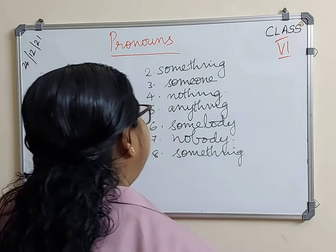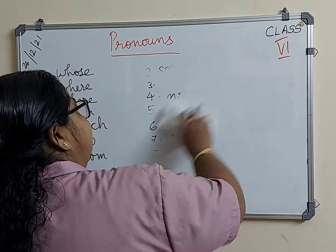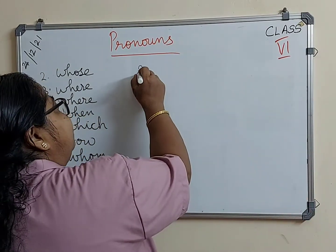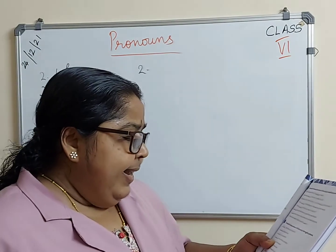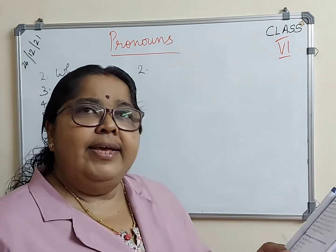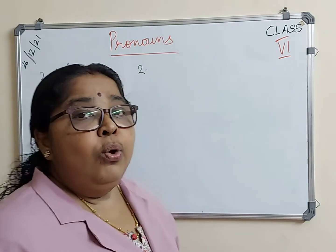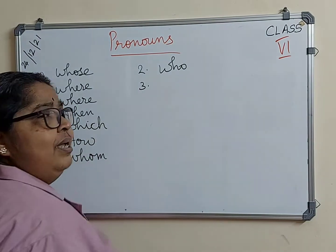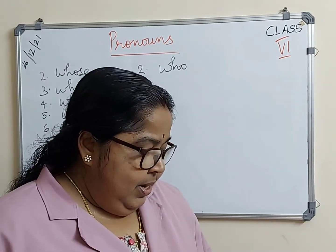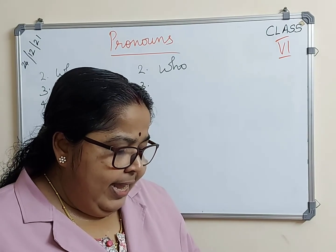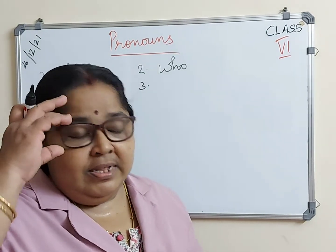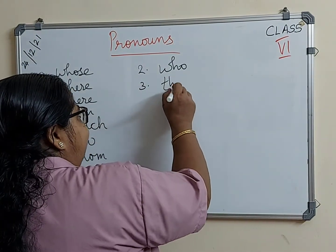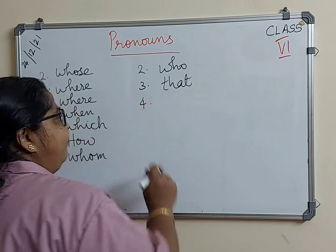Exercise G, question number 2: The girl who is carrying the bouquet is my sister. Question 3: The sofa that I have bought is very comfortable — the relative pronoun is 'that'.